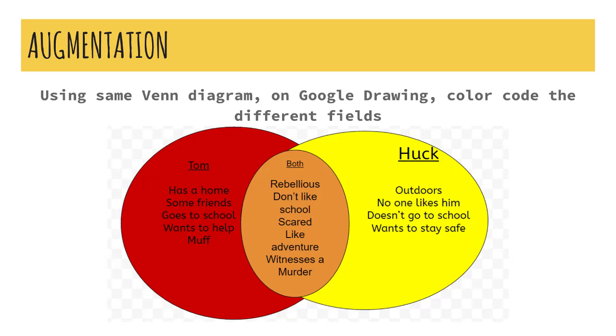In Augmentation, we see the Venn diagram has upped its game a bit with the use of color on Google Drawings, but again, it could still happen with crayons and paper.